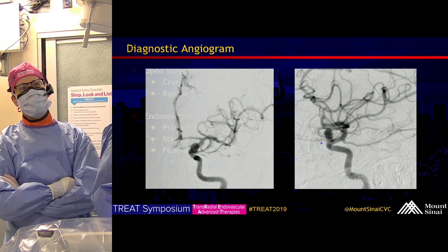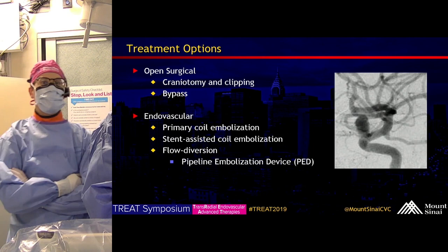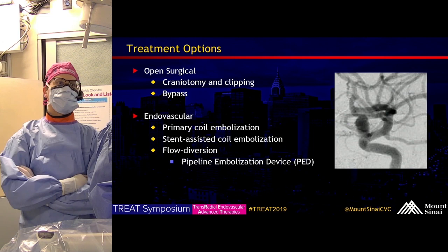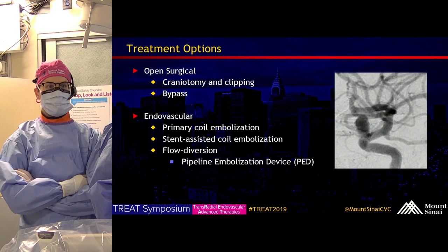The treatment options in this case are either open surgical, which includes craniotomy and clipping of the aneurysm or even a bypass procedure, or the endovascular methods include primary coil embolization, stent-assisted coiling, or flow diversion, which we'll be pursuing today with a pipeline embolization device.